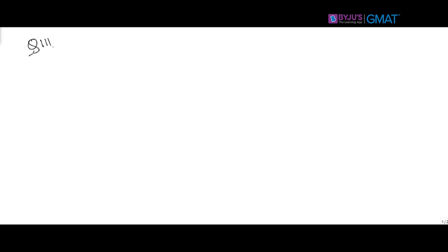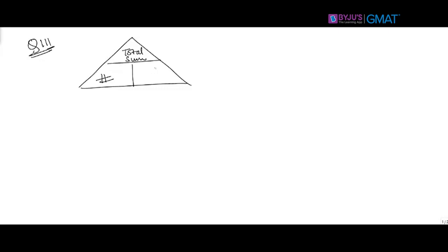GMAT Official Guide 2016, question number 111. A quick recap on a formula we will use in this question: the average triangle. The larger chunk is total sum, this is number of items, and this is average. If it's side by side you multiply; if it's up and down you divide. To find total sum: multiply number of items by average. To find average: divide total sum by number of items. To find number of items: divide total sum by average.